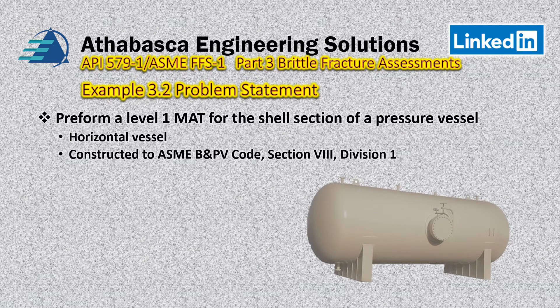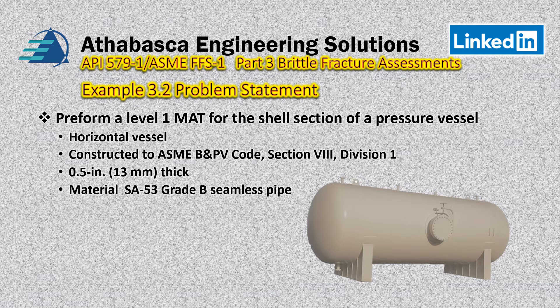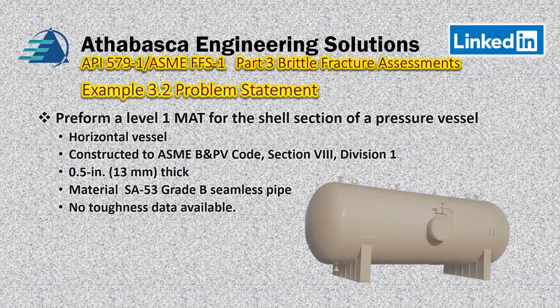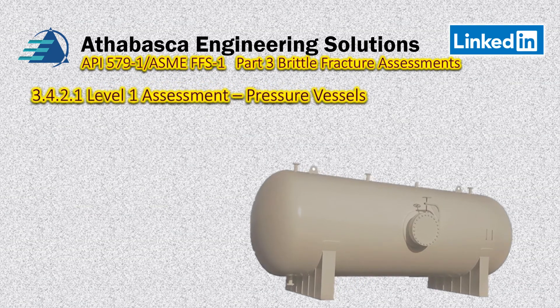So let's continue through this example. We have a horizontal vessel constructed to ASME Boiler and Pressure Vessel Code Section 8 Division 1. It is half an inch thick and constructed of SA-53 Grade B seamless pipe, and there is no toughness data available.